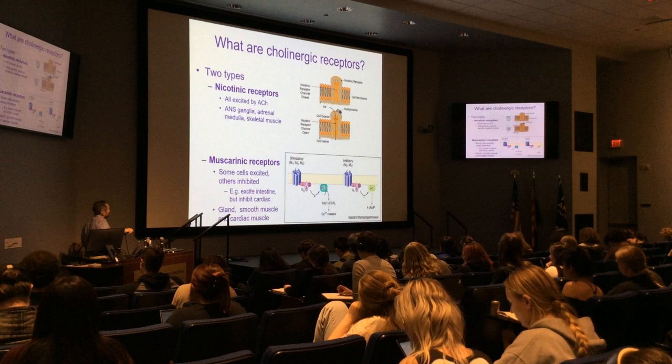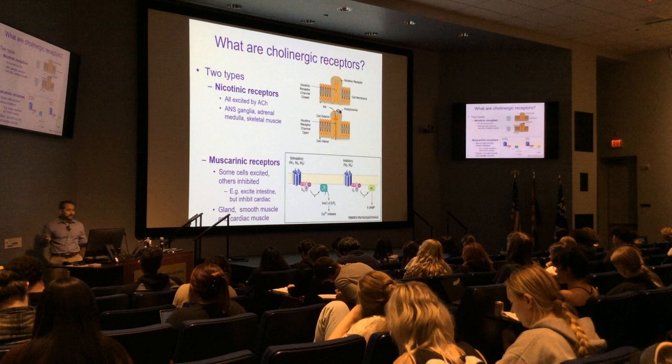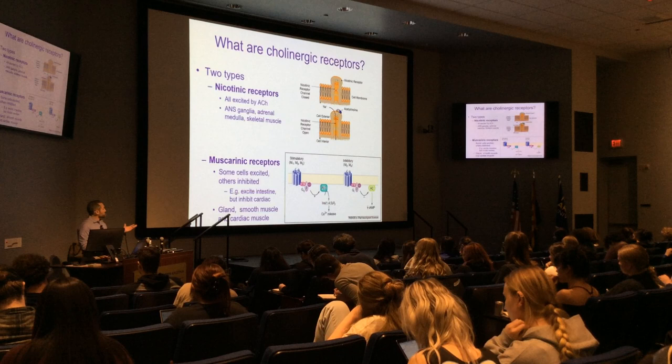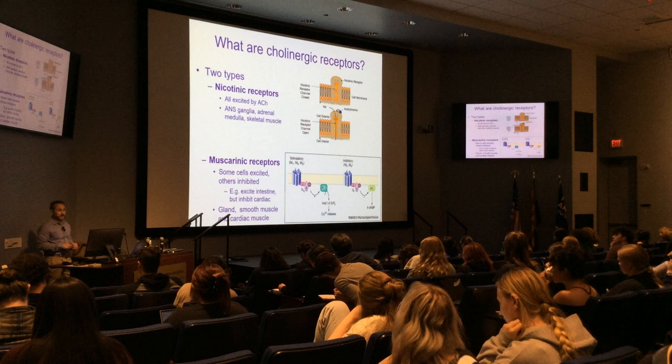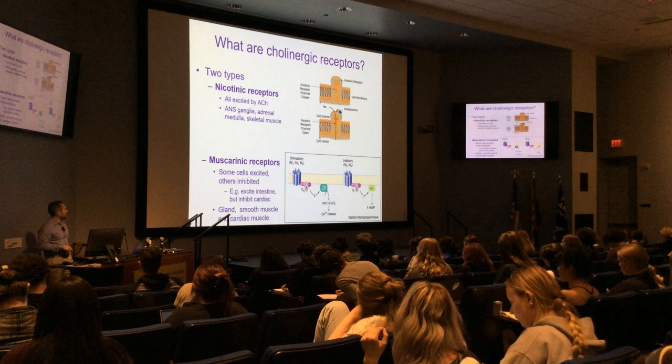Muscarinic receptors respond depending upon what's happening at the level of the tissue. Muscarine is a mushroom toxin — the research was elucidated by studying mushrooms, and so these receptors are named for the mushroom muscarine.